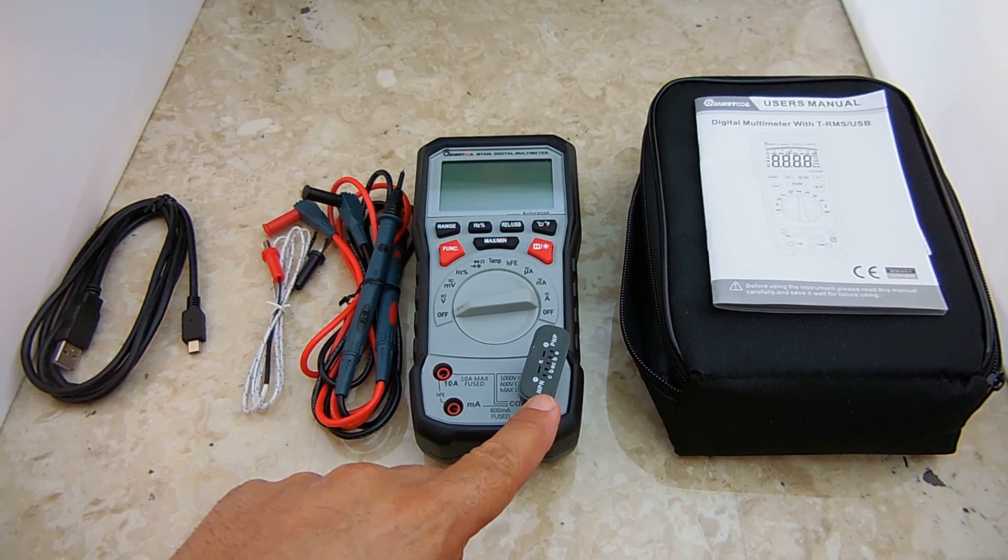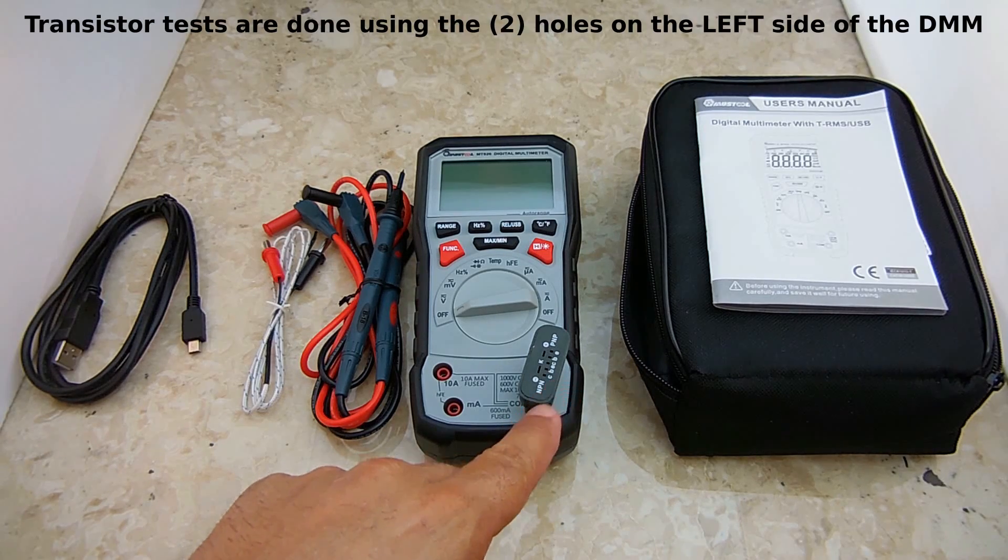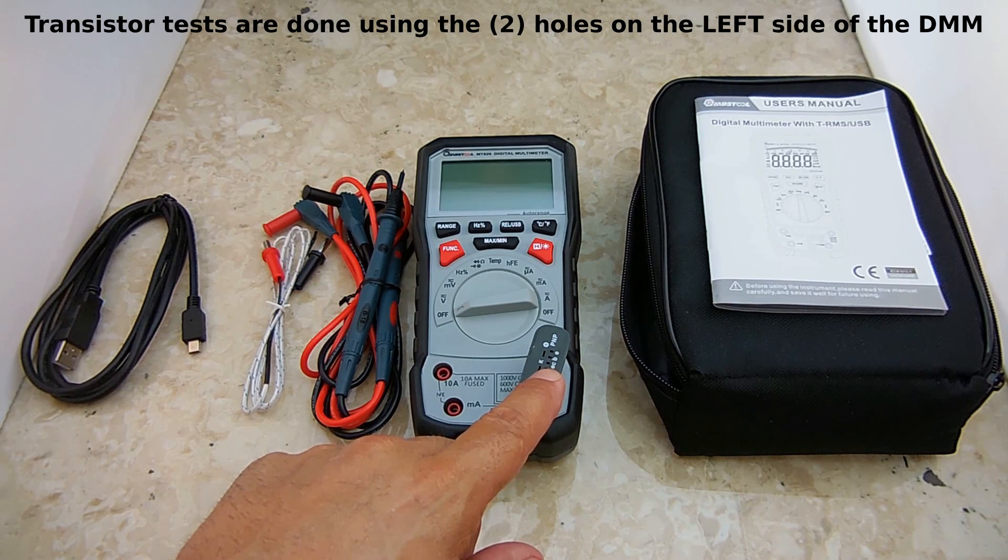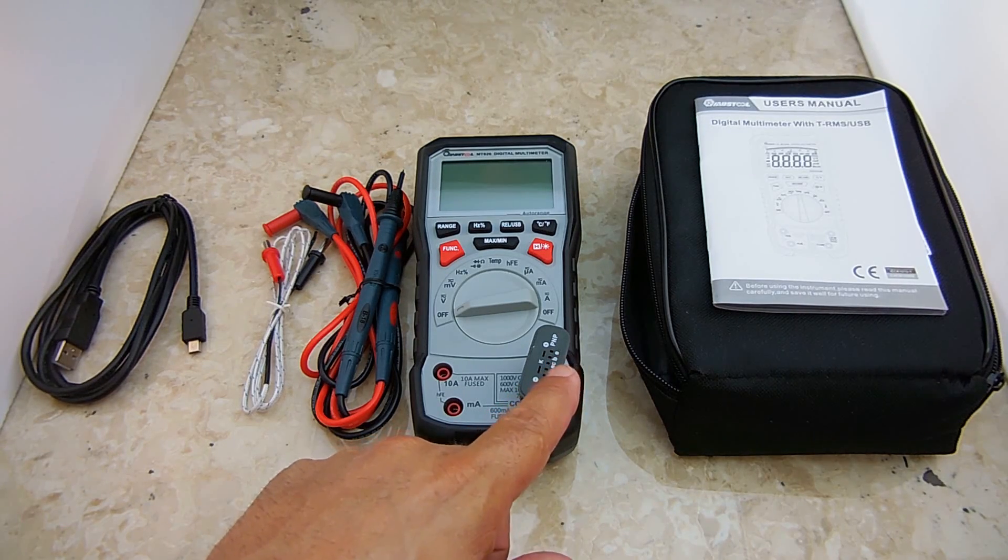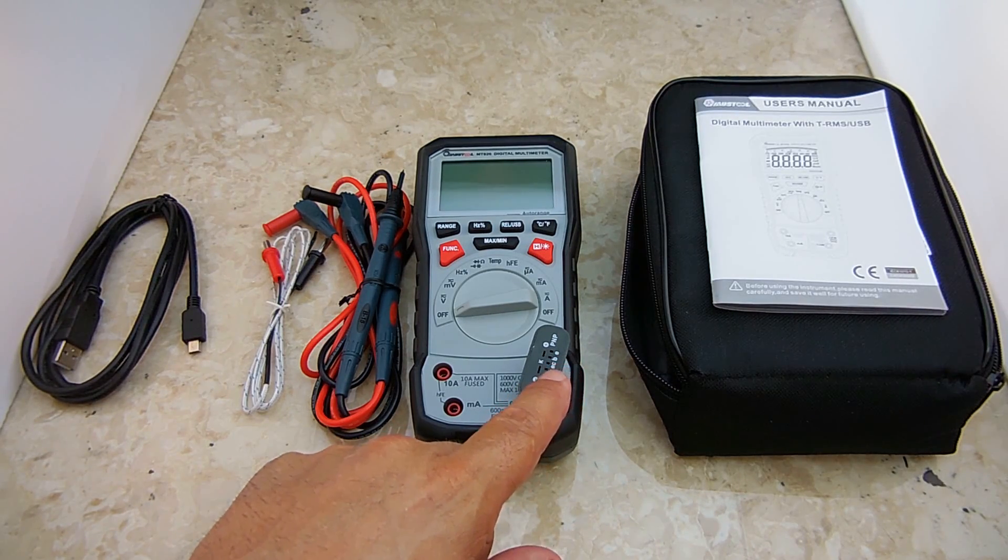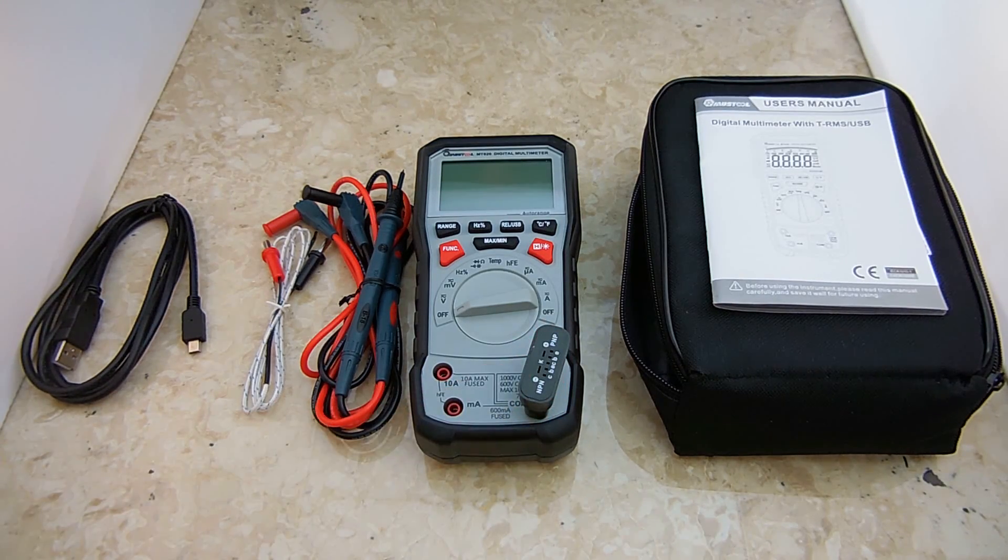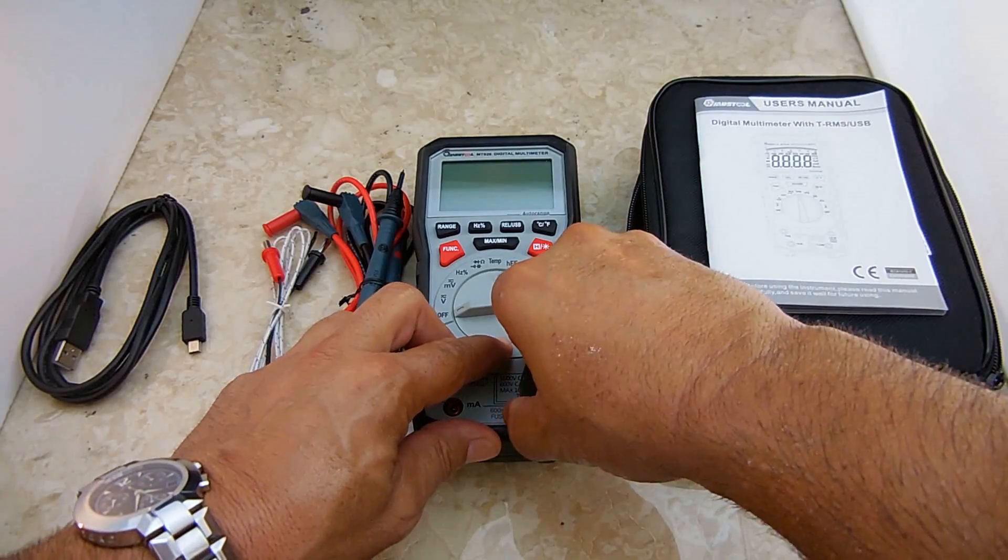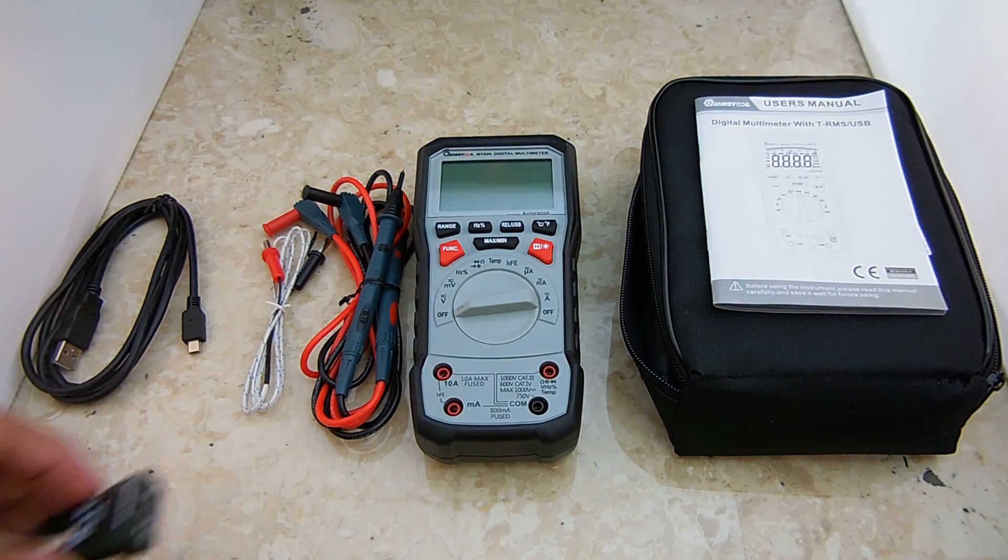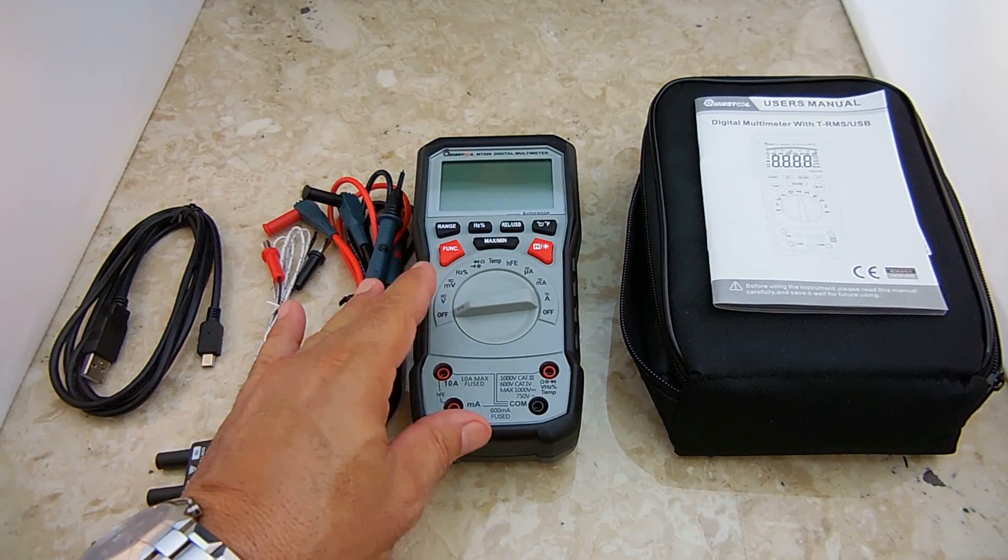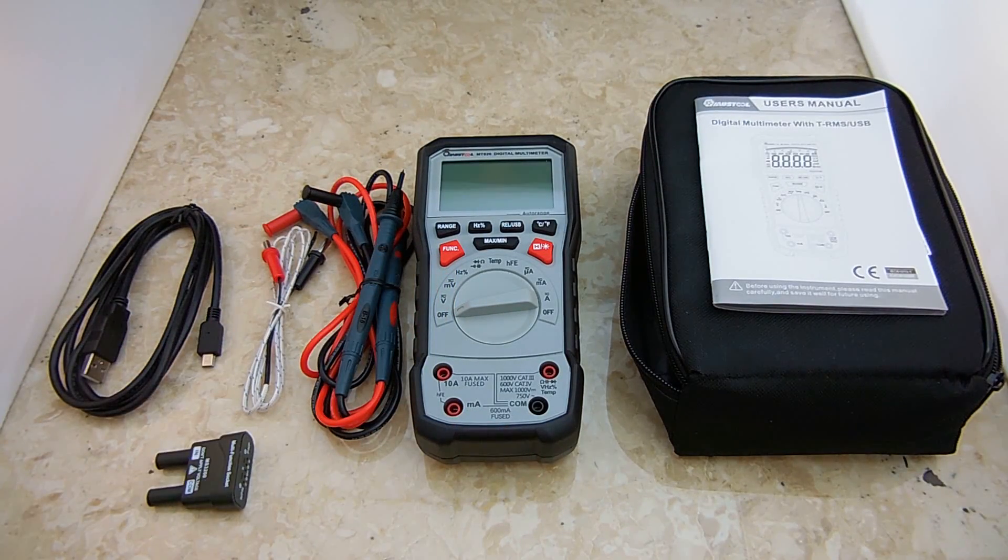This also checks transistors. You have NPN, the collector is the first hole, base, and then the emitter. If you're using PNP, you would plug it into the last three holes where it says collector base emitter. It's a very nice feature to have this.